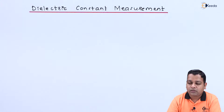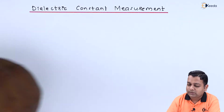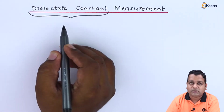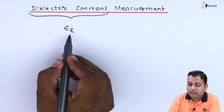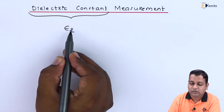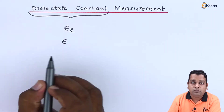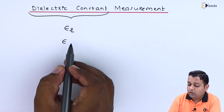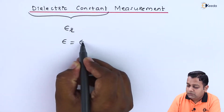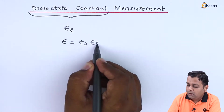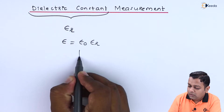We start with our topic: dielectric constant measurement. The dielectric constant is denoted by the symbol epsilon suffix R, where the suffix R stands for relative dielectric constant. This dielectric constant is also referred to as permittivity. The total permittivity or total dielectric constant is equal to epsilon, which is the multiplication of epsilon_0 by epsilon_R.